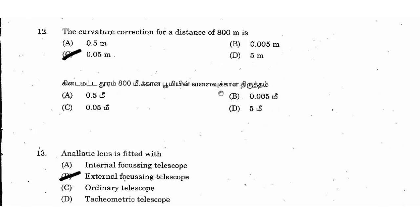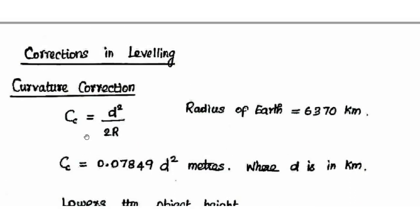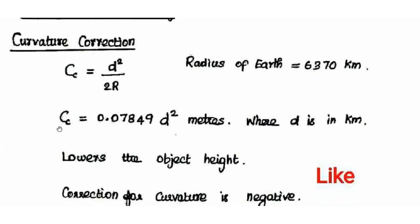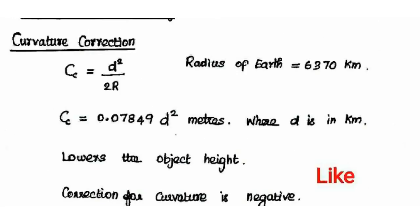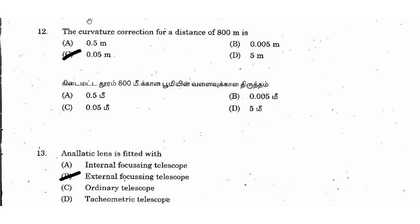Next question: the curvature correction for a distance of 800 meters. Substituting into the formula, the right answer is option 0.05 meter. There are two types of correction: curvature correction and refraction correction. The curvature correction formula is 0.07849 × d², where d is in kilometers. Converting 800 meters to kilometers gives 0.8 km. Substituting: 0.07849 × 0.8² gives a curvature correction of 0.05 meter.